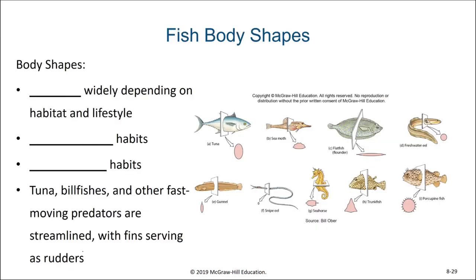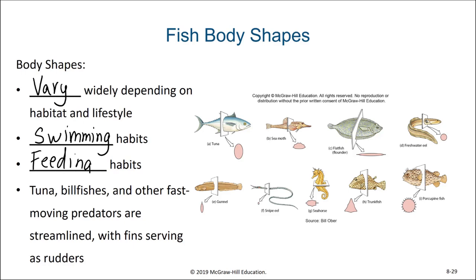Not only do fish vary in their color, they also vary in their overall body shape. These body shapes vary based on habitat and lifestyle. Fish can have different swimming habits, different feeding habits, and these can all lead to different body shapes. Tuna, billfish, and other fast-moving predators are more likely to be streamlined with their fins serving as rudders.